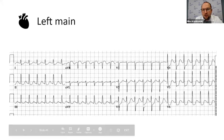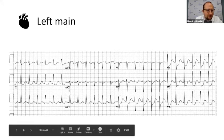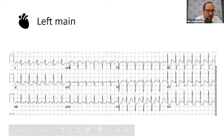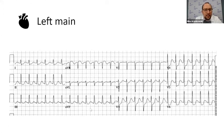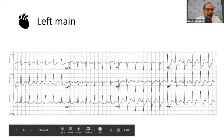So you see them here — V2 through V6 all have ST depressions. The lateral leads, lead one and AVL, have ST depressions, and you also see ST depressions in the inferior leads. This is an EKG to burn in your memory, because you might get a patient with chest pain and think they just have diffuse ST depressions — not that bad — but then not recognize a small ST elevation in AVR.